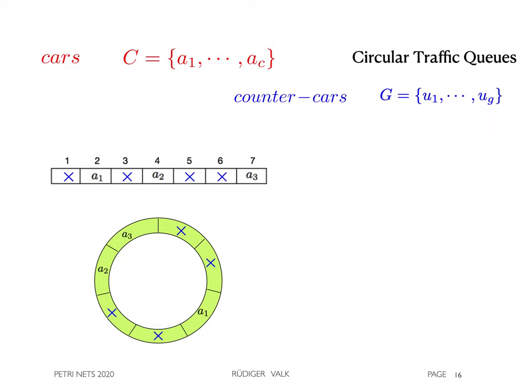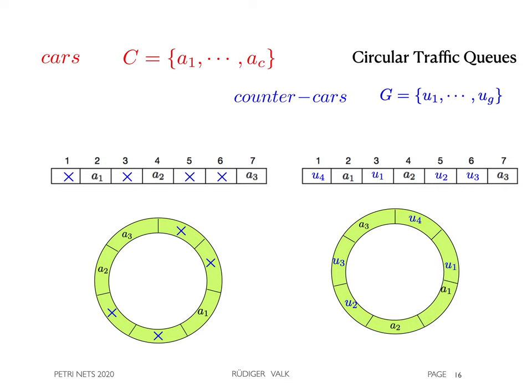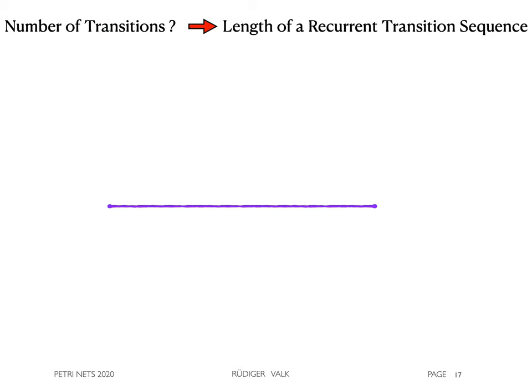Although the gaps can be replaced by individual traffic items, they may be called counter-cars represented in blue color here. For the cyclic model, we need the number of transitions. It is computed by the minimal lengths of recurrent transition sequences, that are sequences which reproduce a given initial state.